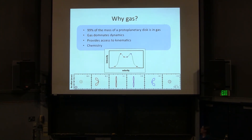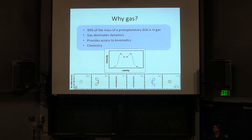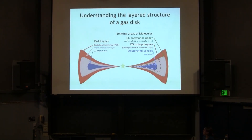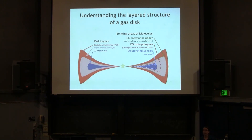When you see double-peaked lines like this and channel maps, this is the velocity structure you should look for in circumstellar disks. Gas also provides access to chemistry, which is ultimately important for understanding planet formation. I'll talk about chemistry and its effects on planet formation later on today. The other key point is that disks are not homogeneous in terms of their gas — they have a layered structure. This diagram focuses on the carbon monoxide molecule, but other molecules will have similar layered structures.